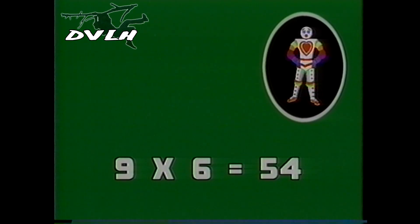Nine times one is nine. Nine times two, eighteen. Nine times three is twenty-seven. And nine times four is thirty-six. Nine times five is forty-five. Nine times six is fifty-four. Nine times seven is sixty-three. And nine times eight is seventy-two. Nine times nine is eighty-one. And nine times ten is ninety. Nine times eleven is ninety-nine. And nine times twelve is a hundred and eight.